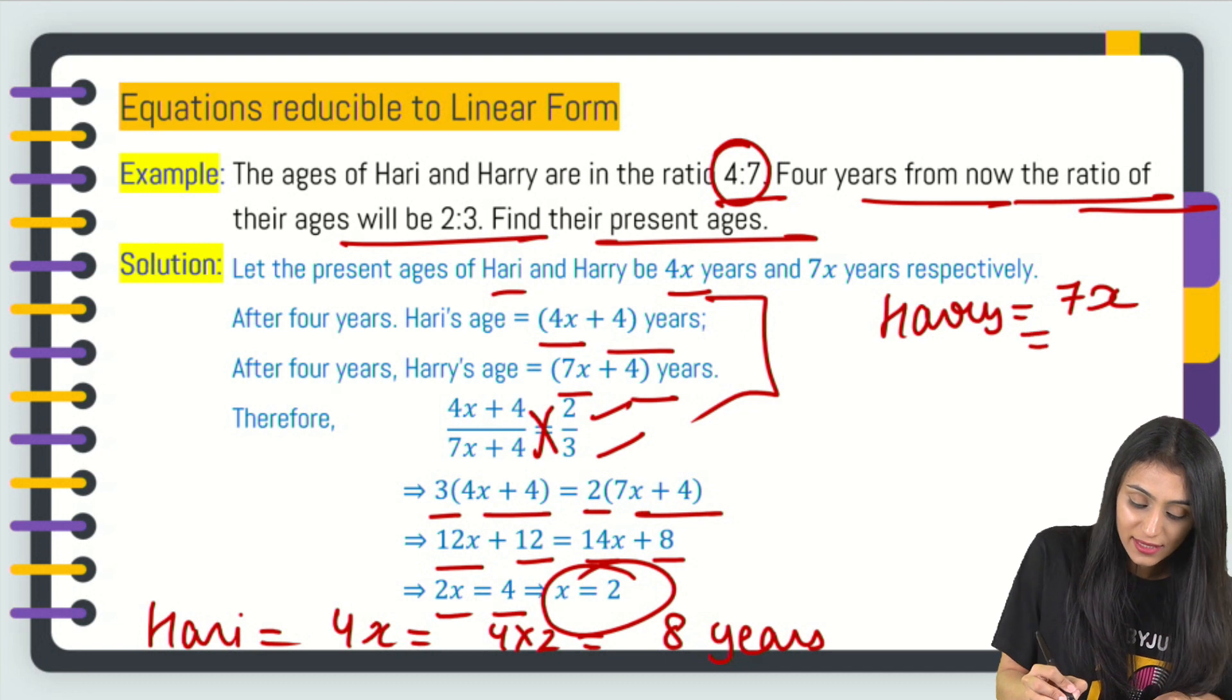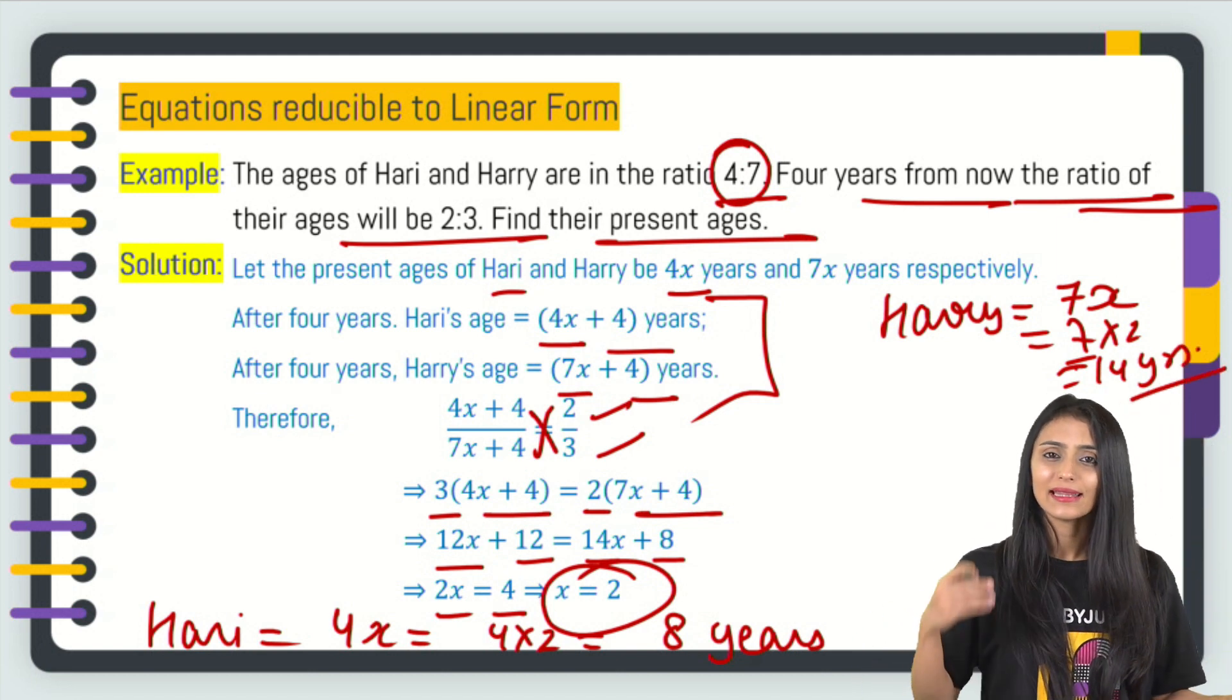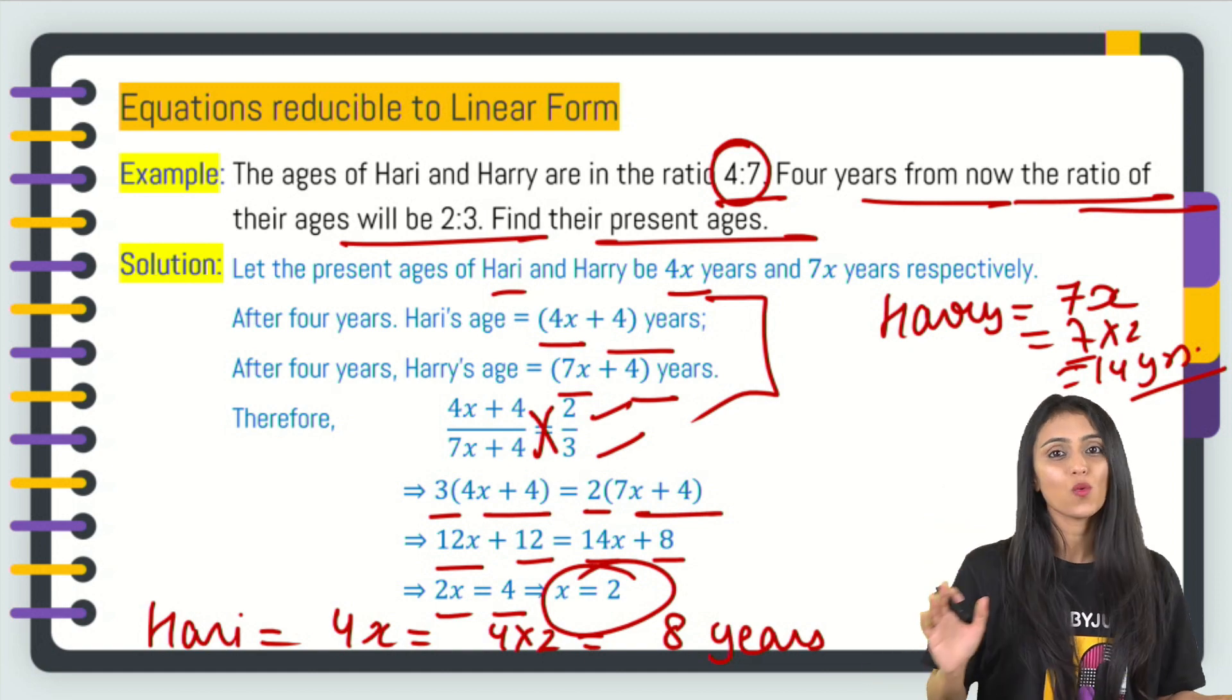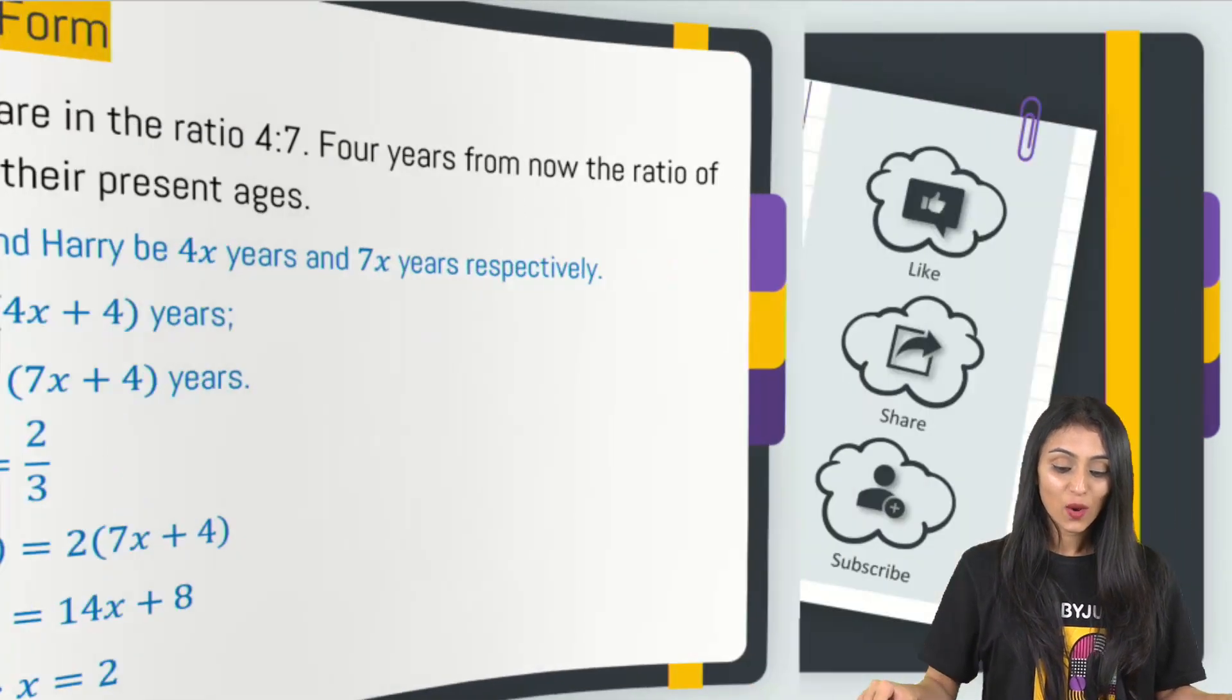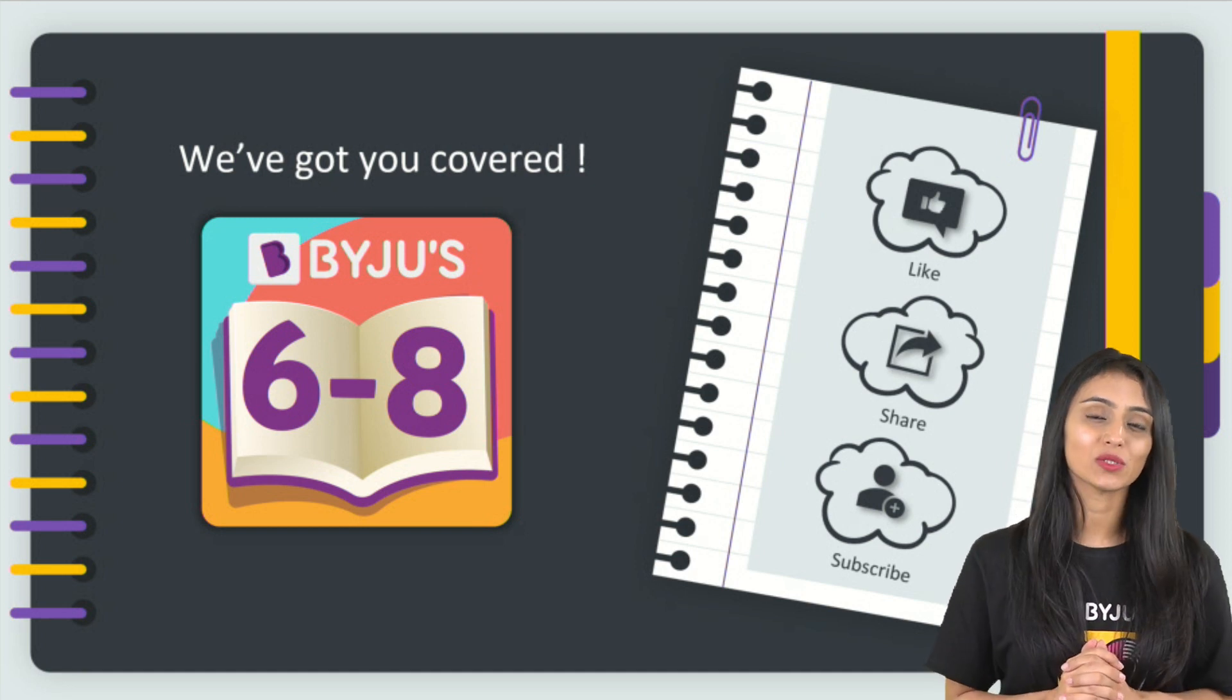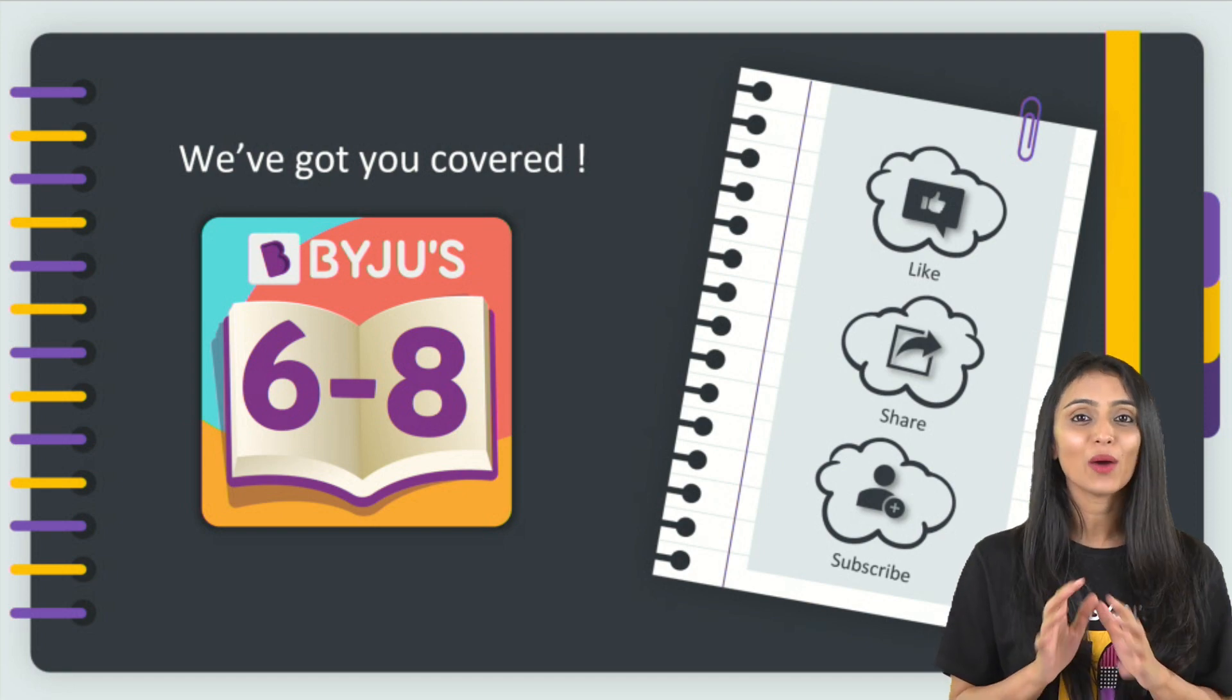And if I talk about Harry, that's going to be 7x. So that is 7 times 2, which is going to equal 14 years. So we have their present ages now. That's all. That's a very simple way to solve any word problem that we have. I hope that this topic is crystal clear in your mind. If you have any doubts, please leave your comments in the comment section below and also do let me know how you like this topic.